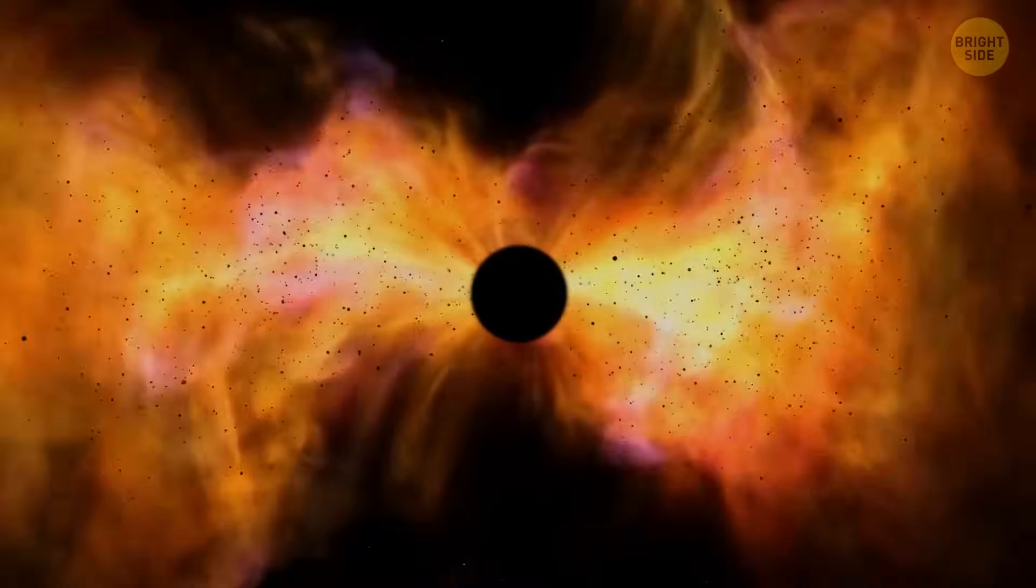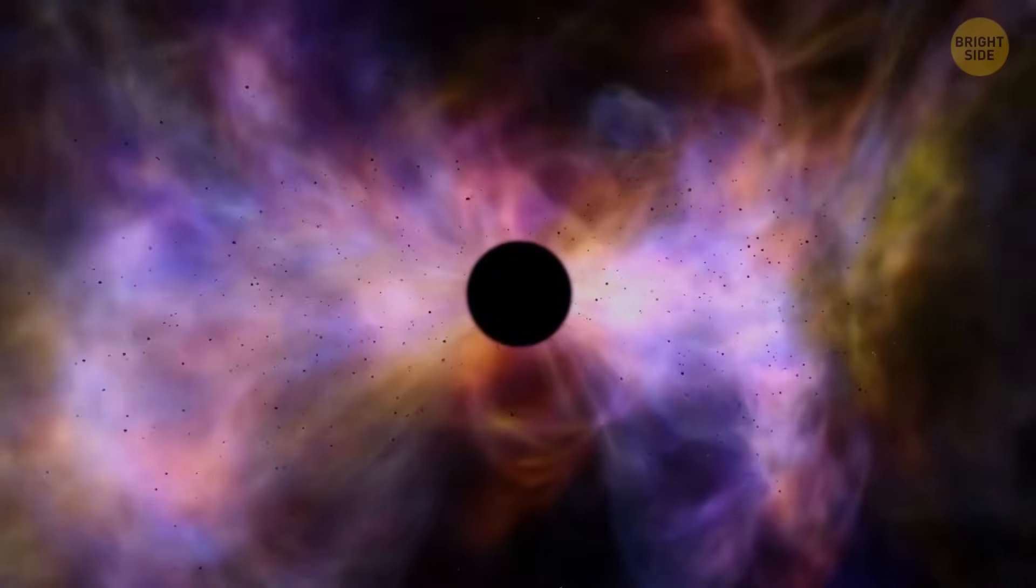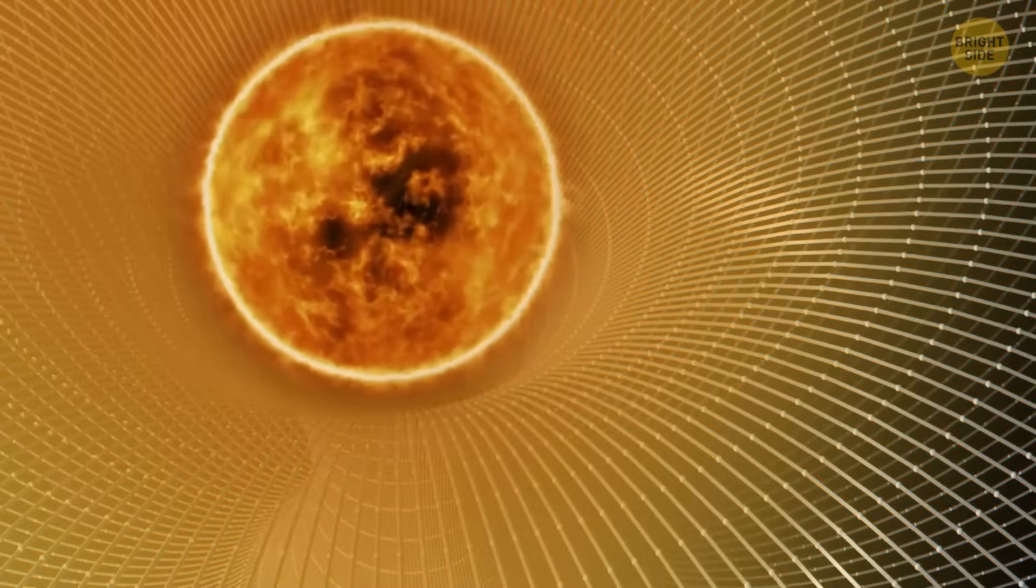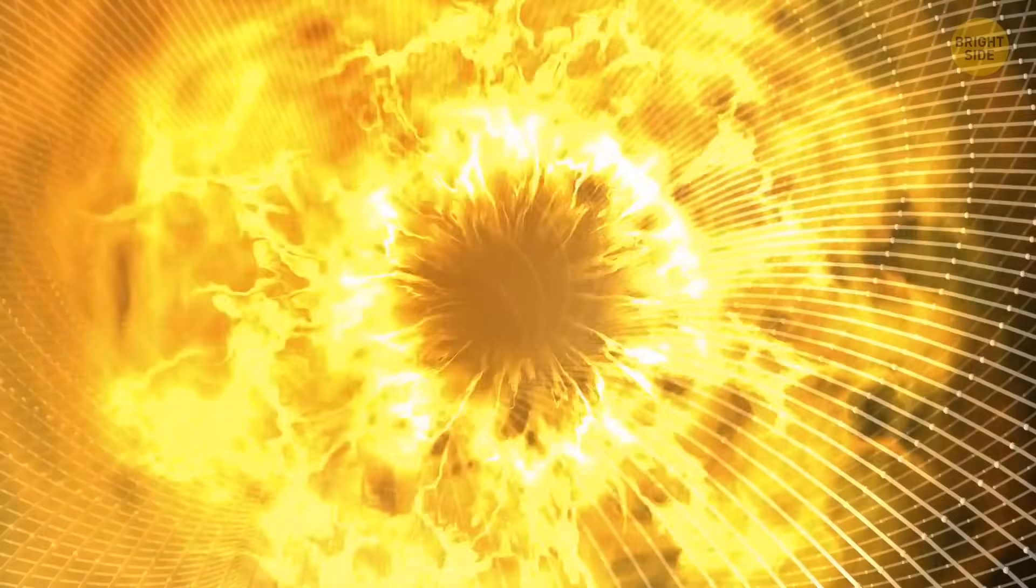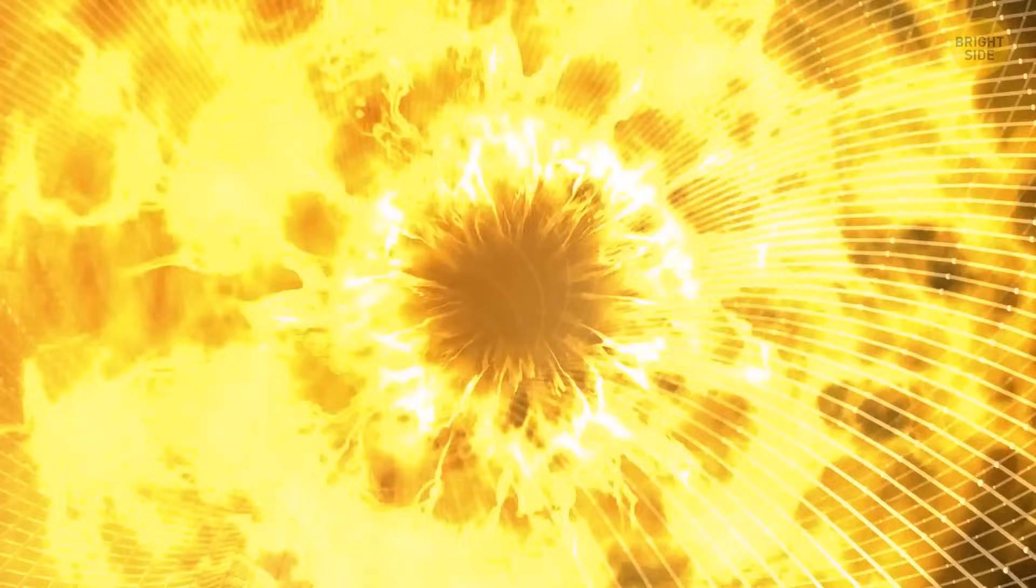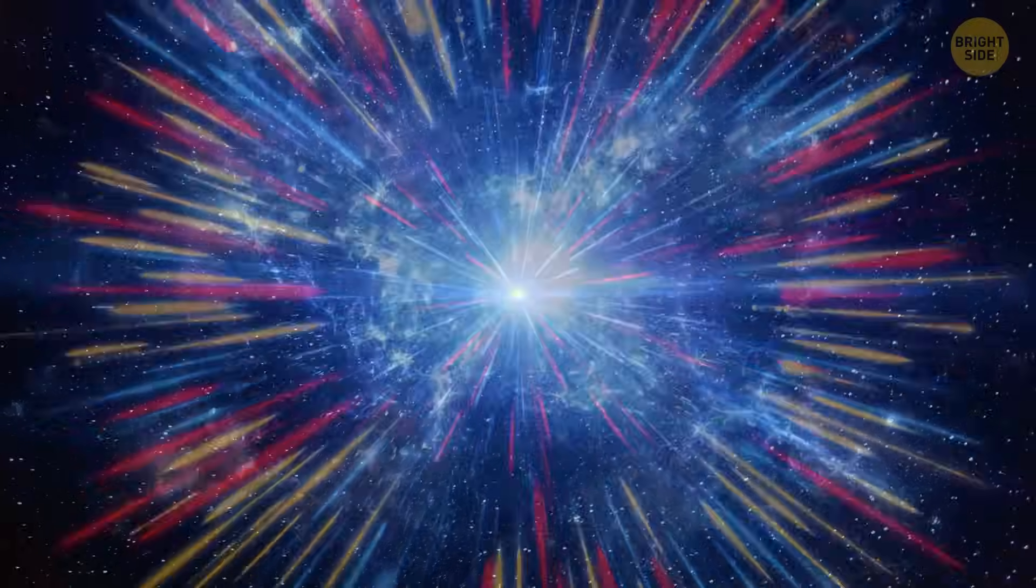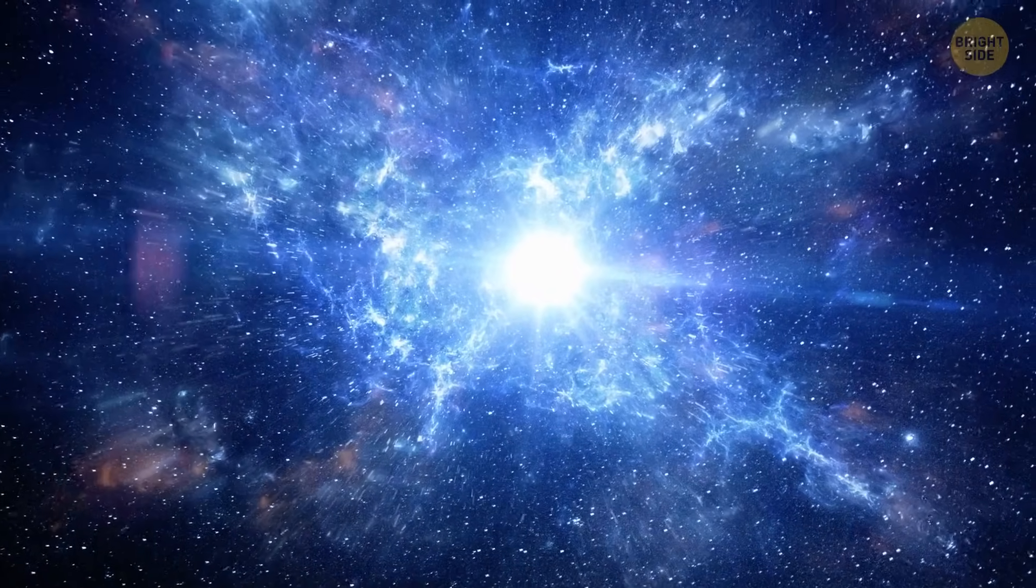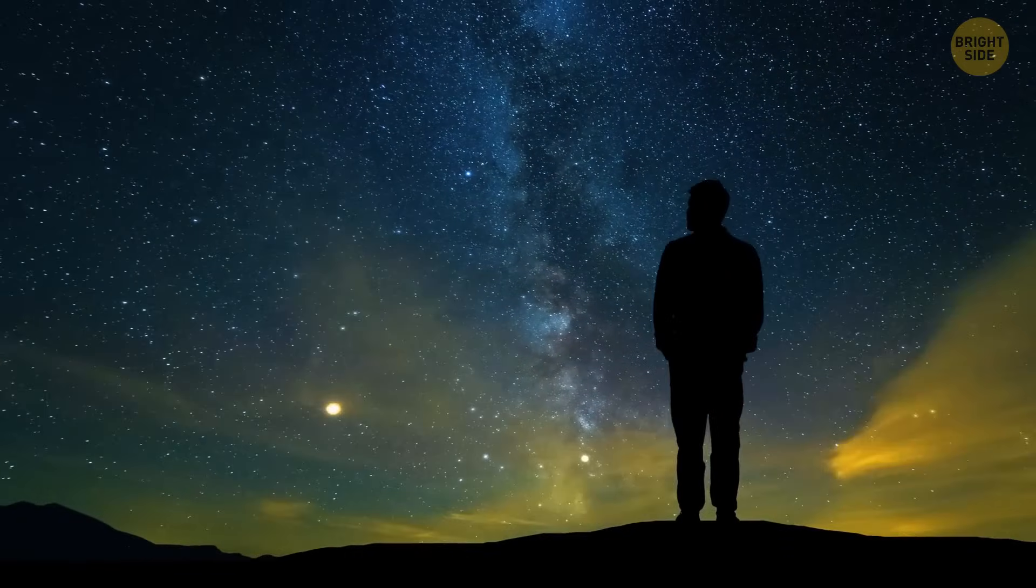And as the Sun gets pulled in, it would start to release massive amounts of energy in the form of light and heat. The Sun would become much brighter and hotter than before. Or, the Sun's outer layers would be vaporized, creating a massive cloud of gas and dust that would expand outwards. It would be like a cosmic fireworks show, but with terrible consequences. Even though it would be one of the most spectacular views in the universe, we wouldn't be able to see it.